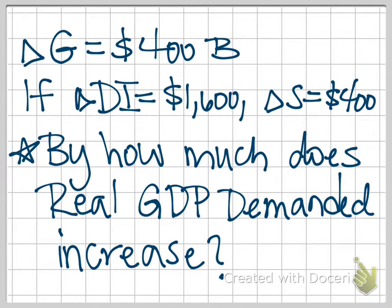So in this example, the government's going to decide to increase their spending by $400 billion, and then you're also told that if disposable income increases by $1,600, this causes savings to increase by $400. And so then the question is asking us to find, by how much does real GDP demanded increase?